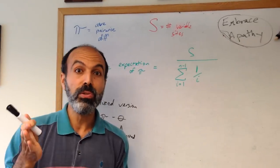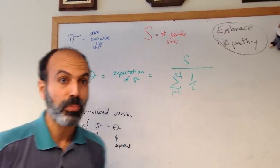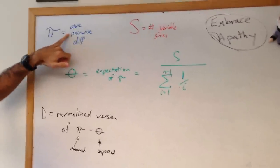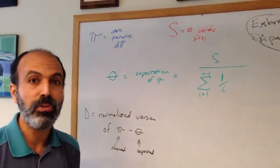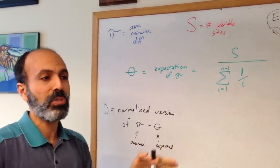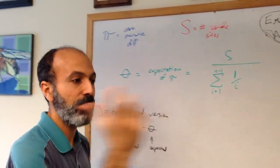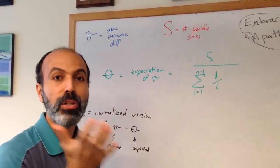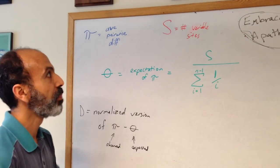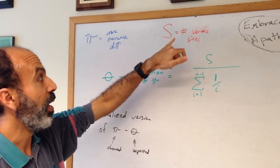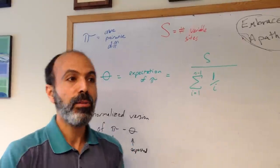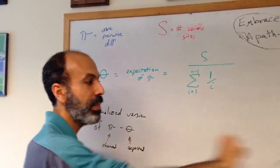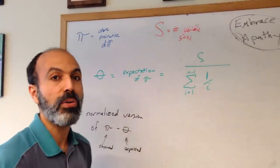These are some statistics we use for looking at variation in natural populations. One of them is pi, the average pairwise difference among individuals. If you look at all individuals in a population one by one, on average, how much do they differ? S is very similar, the number of variable sites. When you look at all the population at once, how many sites in a long DNA sequence are there that are variable?